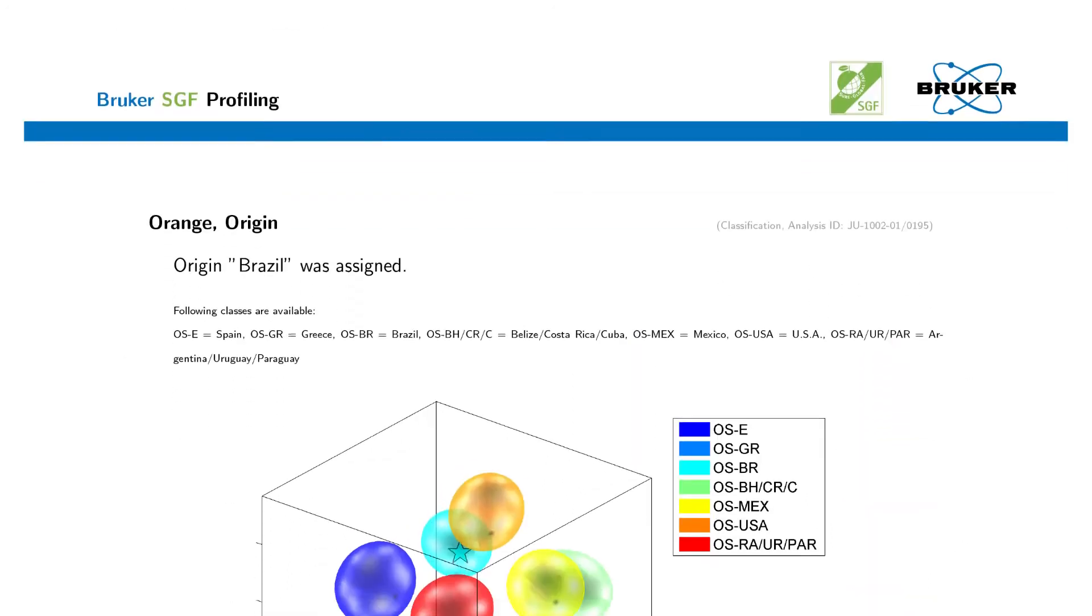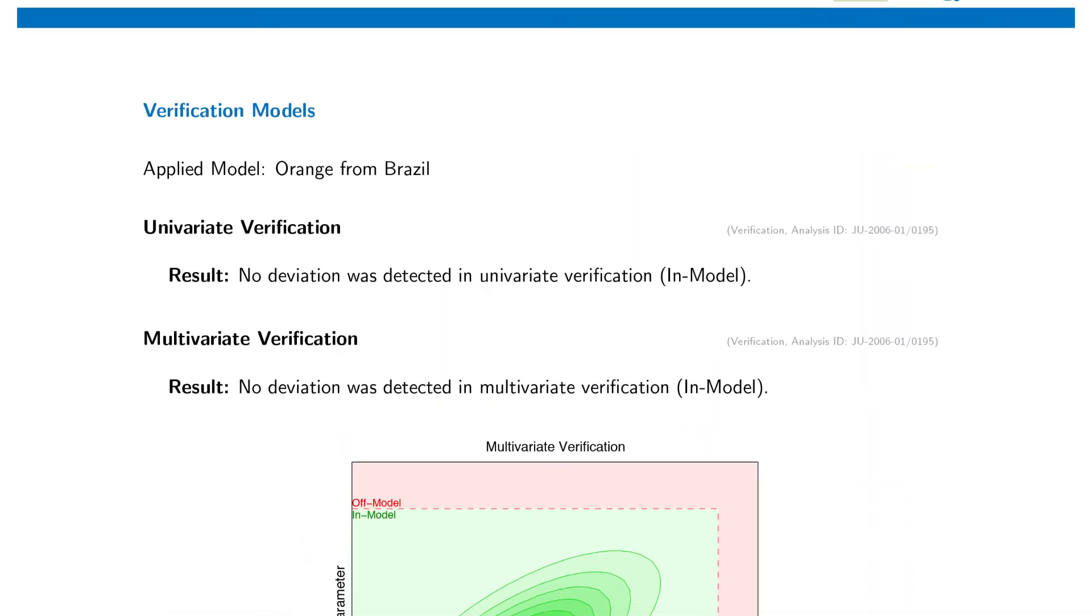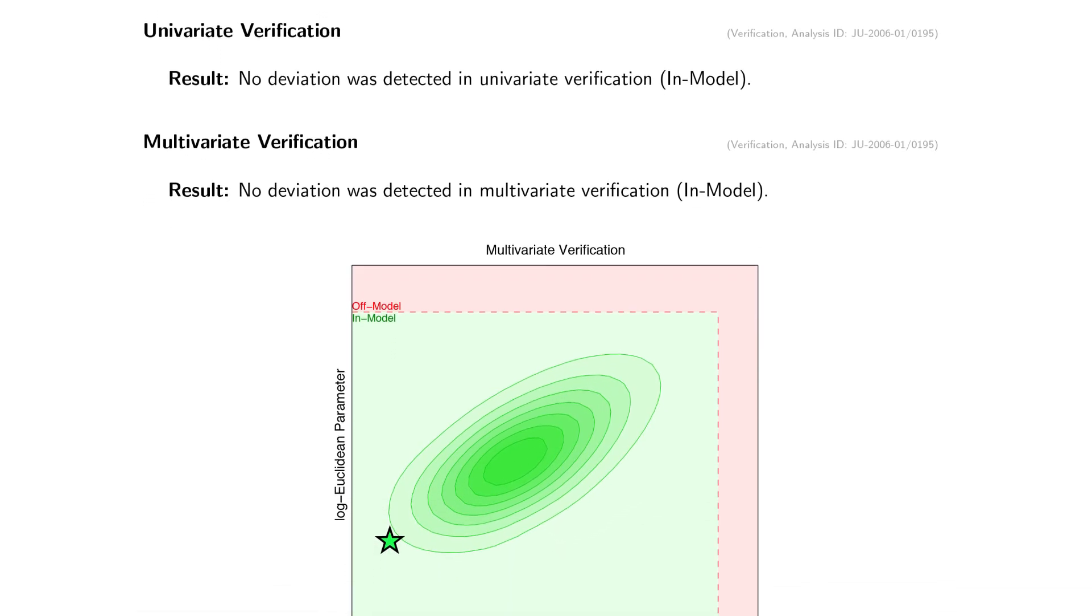Type of juice and geographical origin. The differentiation of direct juice and rediluted concentrate is also part of the automatic report.